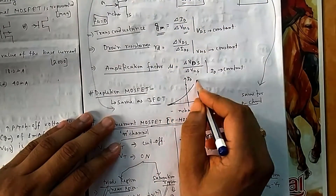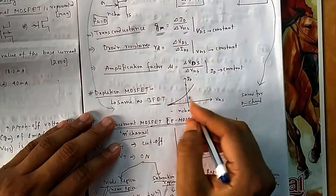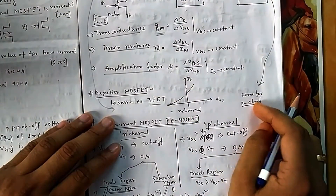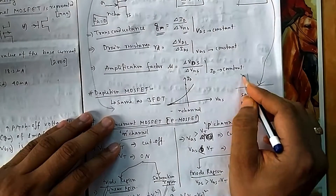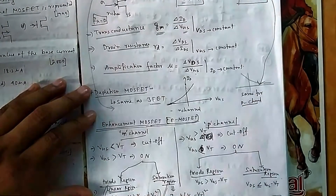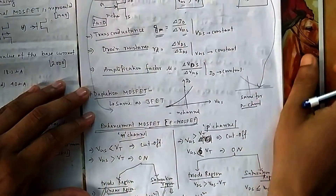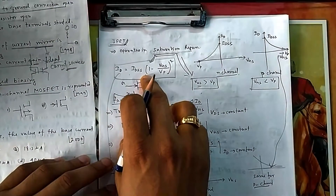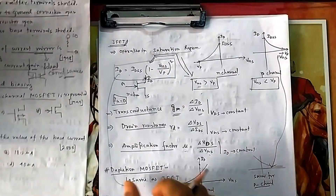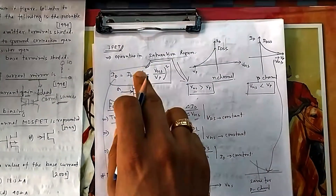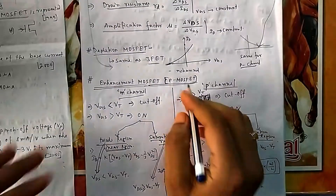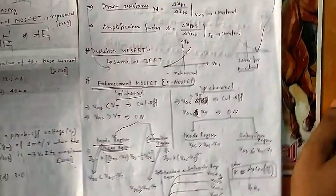For N-channel depletion MOSFET, V_GS can also cross into positive values. For P-channel the curve is the reverse. The depletion MOSFET is exactly like JFET, so the JFET formula also applies to depletion-type MOSFET.